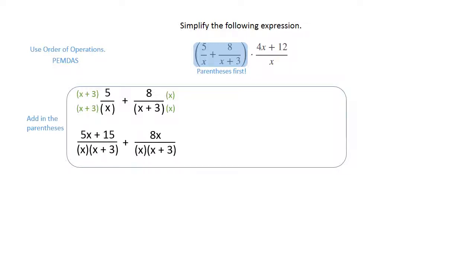The new left term when you distribute the 5 is 5x plus 15, and the denominator is x times x plus 3. The new right term is 8x when you multiply the numerator, and you've got x and x plus 3 in the denominator.